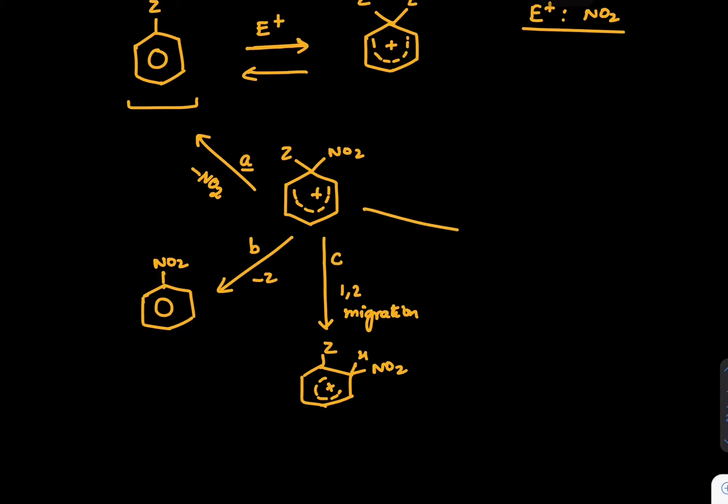Next option is option number D. In option number D, you can say Z migrates, NO2 stays there. So if NO2 stays there and Z migrates, we can say NO2 is staying here, Z is here, H will come up here. And we can draw this kind of answer. Like this is the intermediate.